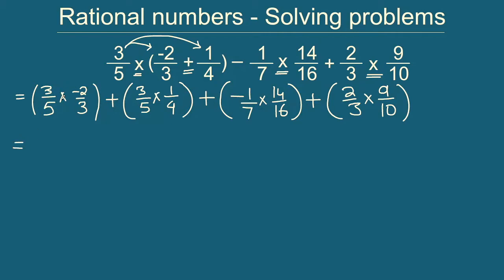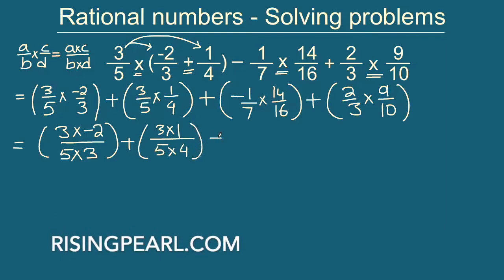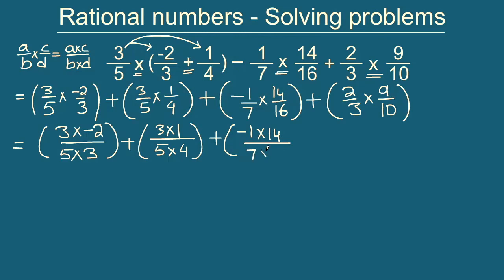So let's write equal to. Remember when we multiply, say we have a by b times c by d, the way we do that is we multiply the numerators then divide it by the product of the denominators. So this will look like, and I'm going extremely step by step without skipping any step, so it will be 3 times minus 2 divided by 5 times 3. Then here we will have similarly in the numerator 3 times 1 and denominator 5 times 4. Plus here we will have minus 1 times 14 divided by 7 times 16, and then for the last term we will have 2 times 9 divided by 3 times 10.